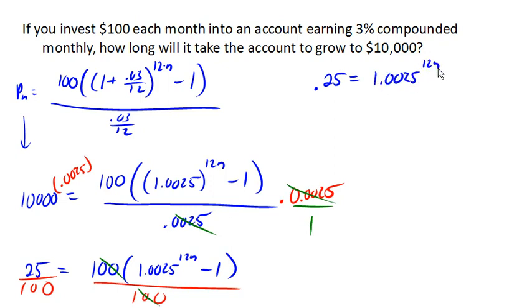Now, we're trying to get that exponential by itself here, so let's go ahead and add 1 to both sides. So now I've got 1.25 equals 1.0025 to the 12n.